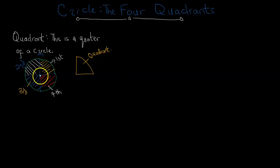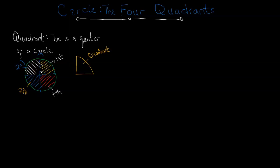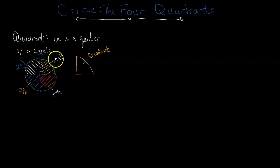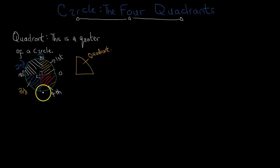All of the angles around this center point sum up to 360 degrees. Since a quadrant is a quarter of a circle, the angle in each quadrant is 90 degrees. The angle in the first quadrant ranges between 0 and 90 degrees, the second quadrant between 90 and 180 degrees, the third quadrant between 180 and 270 degrees, and the fourth quadrant between 270 and 360 degrees.